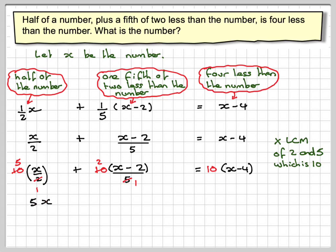After multiplying, we get 5x plus 2(x-2) equals 10(x-4). Now we're going to expand the brackets. So we've got 5x plus 2x minus 4 equals 10x minus 40.